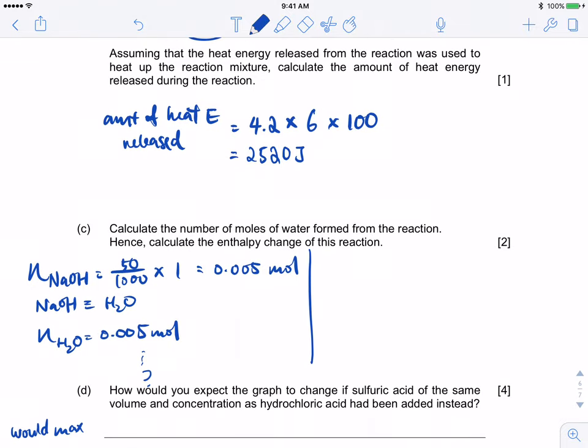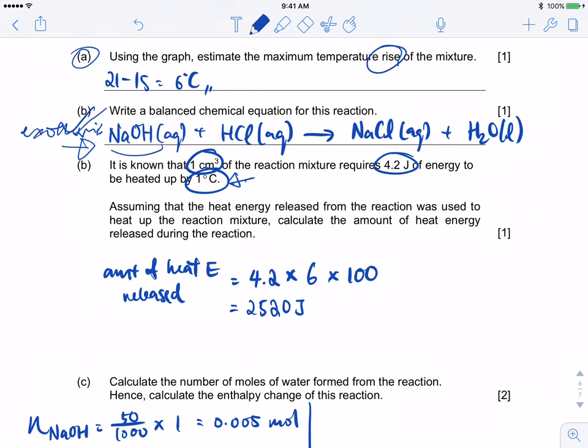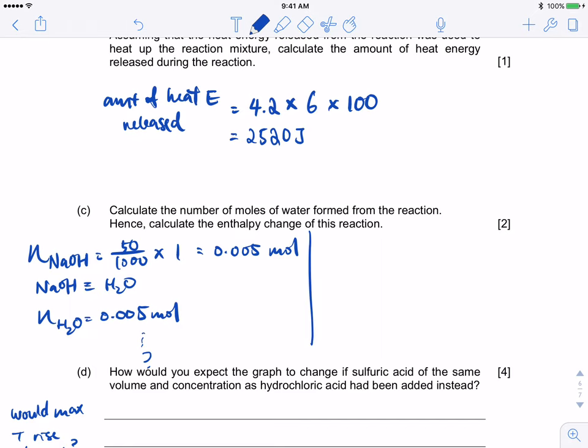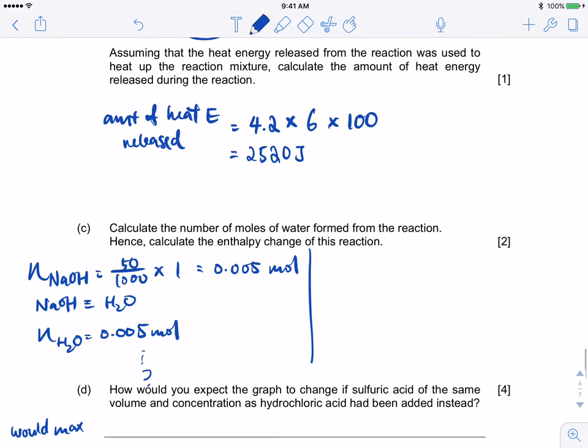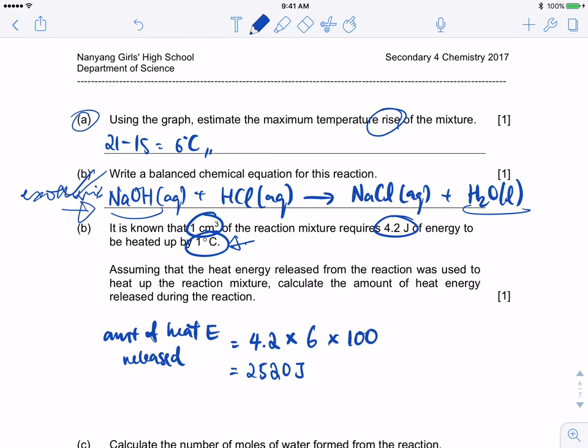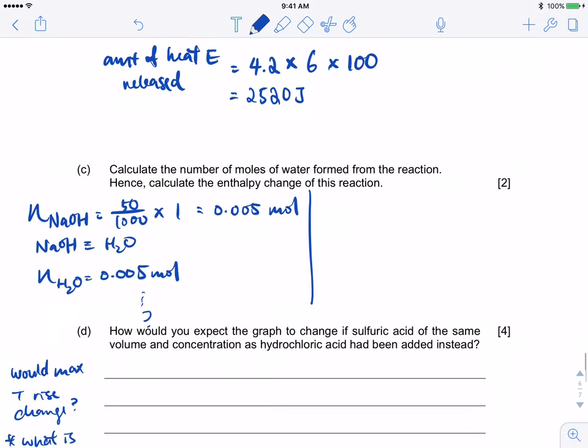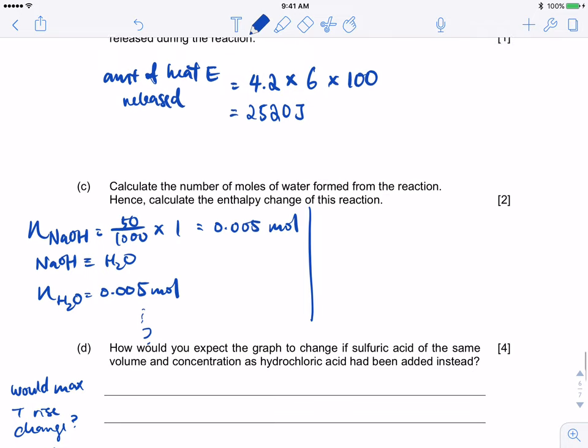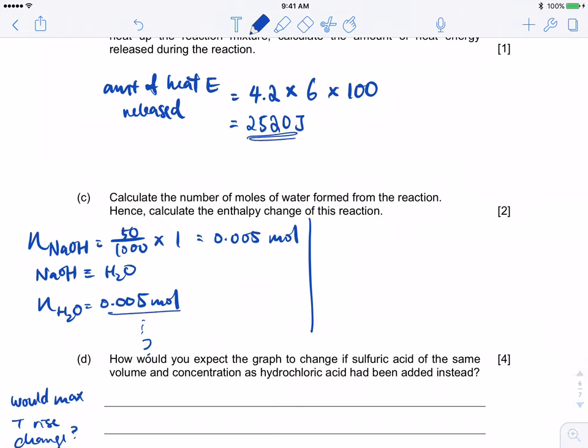Most of you are able to calculate the number of moles of NaOH. It is simply the volume multiplied by the concentration which is 0.05. Since, based on the equation, we have a 1 is to 1 ratio, the number of moles of water produced is also 0.05. Hence, calculate the enthalpy change of this reaction. For this, the enthalpy change for this reaction, you can see that it is when one mole of water is being formed. This is the heat that is generated, and then this is the number of moles. Delta H will be equals to 2520 divided by 0.05. Remember, it is joules per mole. I will get the answer 504 kilojoules per mole.